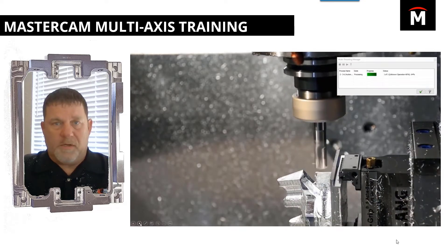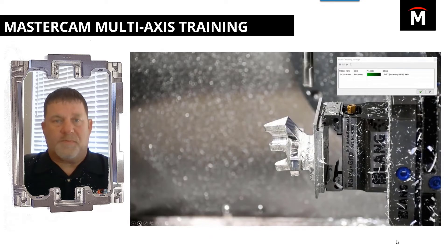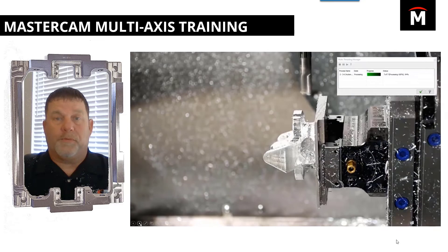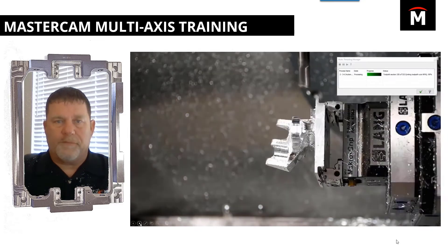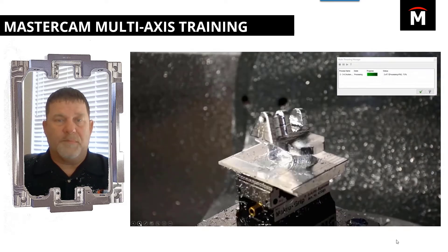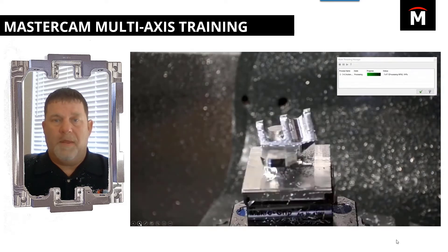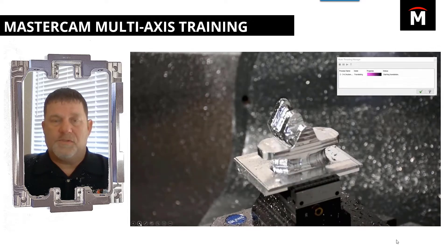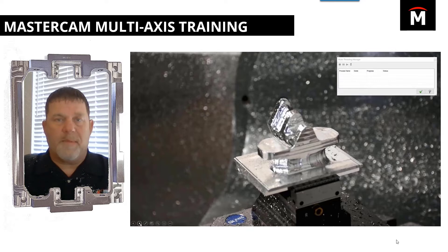Take a quick look at the video showing one of our newer toolpaths — it's called 3+2 roughing. Essentially, you can take a block of material down and rough it into a nice shape, getting it ready to machine. Pretty amazing toolpath.